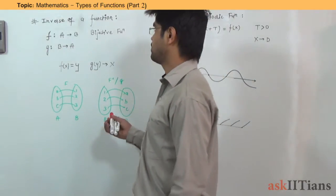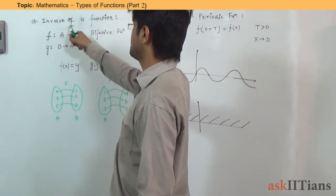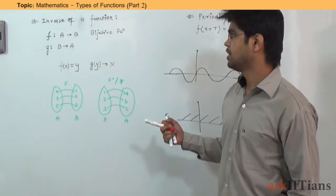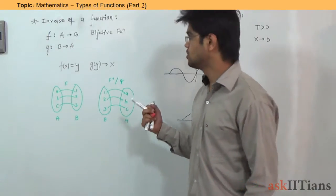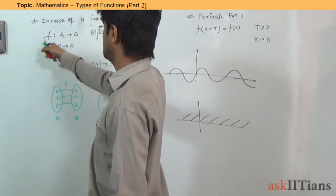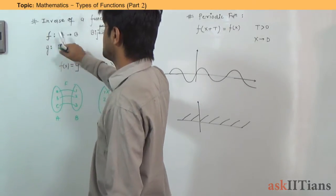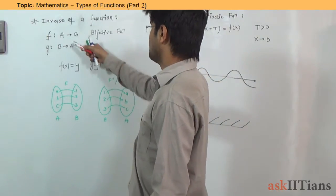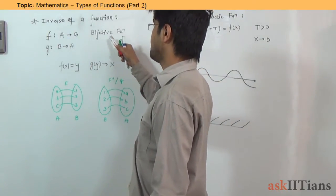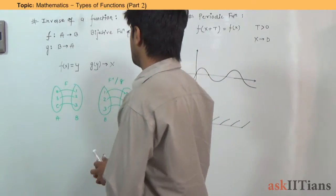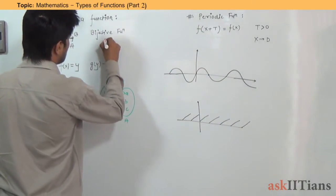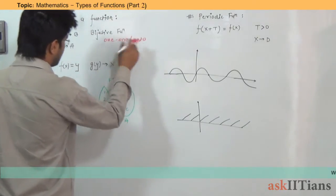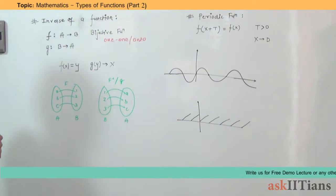The first type of function we are going to study today is the inverse of a function — how to find an inverse. This is a very important property. Let's say there is a function f defined from A to B, where A is its domain and B is its codomain. We are saying that f is a bijective function. By bijective, we mean that the function is one-one and onto.